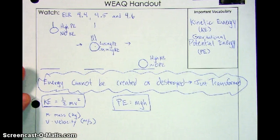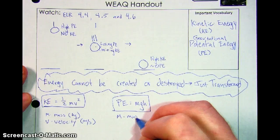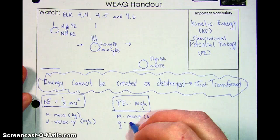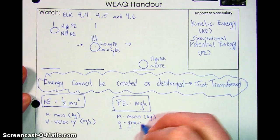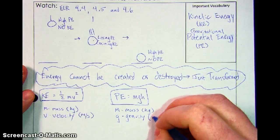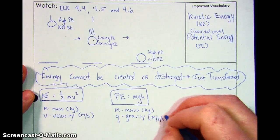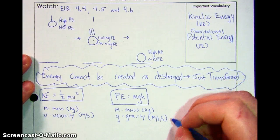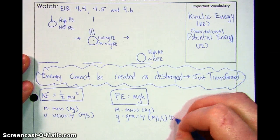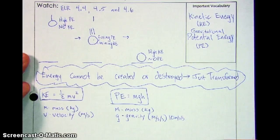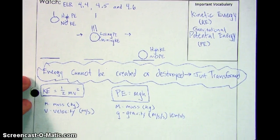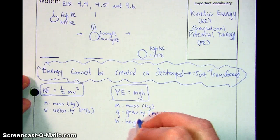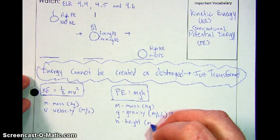For potential energy, the equation is mass times gravity times height. On the potential energy side, m still stands for mass — still kilograms. The g is gravity that we know and love, and that's meters per second per second. For the purposes of this class, when you're talking about potential energy on Earth, we're going to keep our life simple and round to ten meters per second per second, just so we can have some easy math. And h stands for height — we're going to use meters for height.